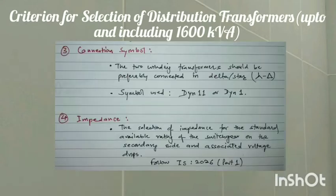Third, connection symbol. For distribution transformers, or two-winding transformers, the connection should preferably be delta-star. The symbols used are mainly Dyn11 or Dyn1.